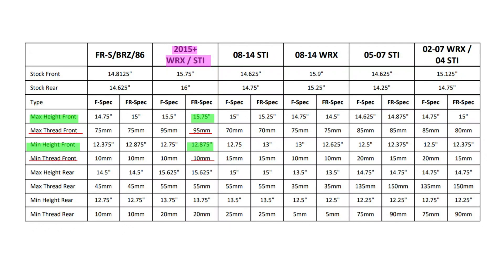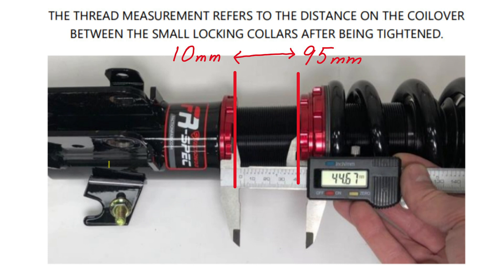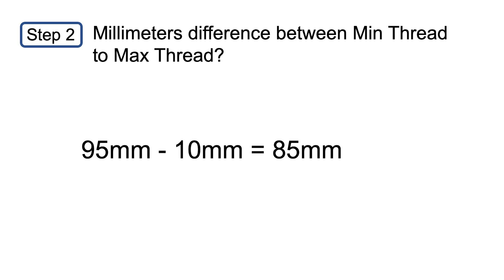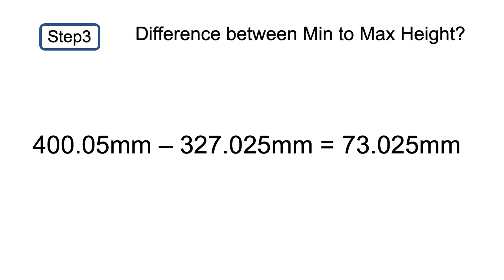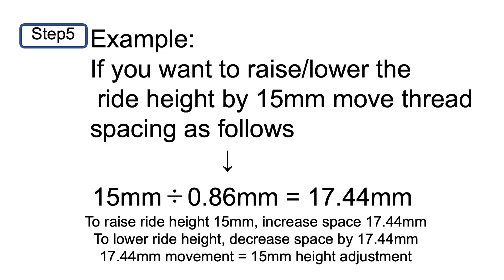Alright guys, so hopefully this video will help you determine how to adjust your FactionFab coilovers — the height — so you're not having to take the wheels off and on to adjust. For some reason they went ahead and used inches and millimeters, so we tried to simplify it. You can pause it if you need to find out all the math, but in a nutshell, this is all the math behind it, and for those of you who are kind of math nerds, go ahead and check the math — it is accurate. I got tired of taking my wheels off and on adjusting the height, trying to figure out how many millimeters adjust in ride height for every millimeter of space between the adjustment rings.